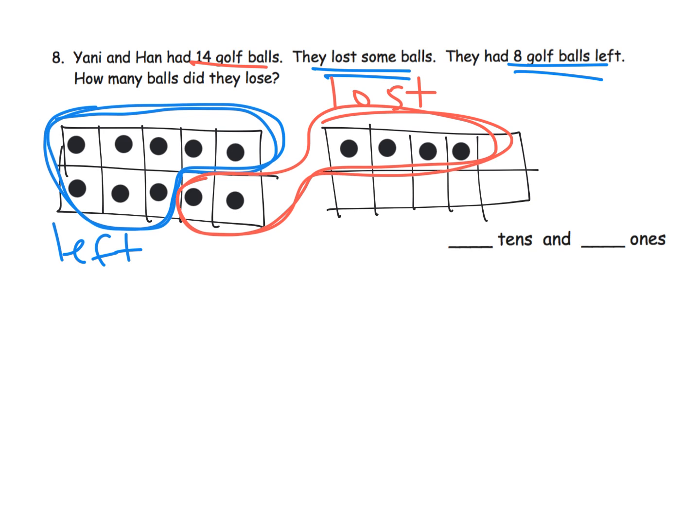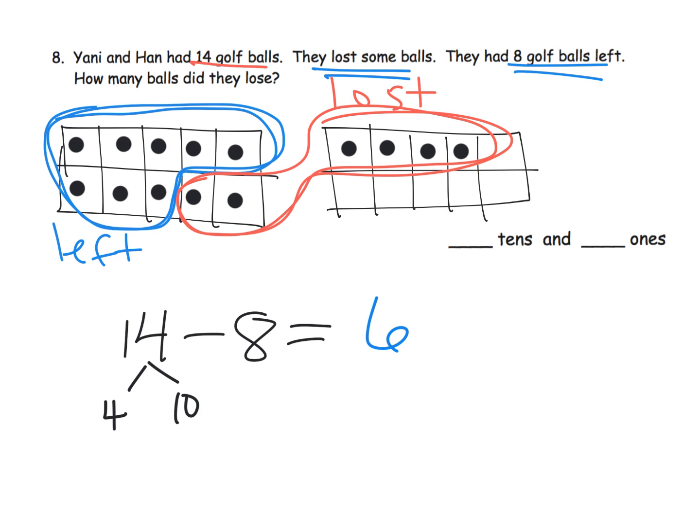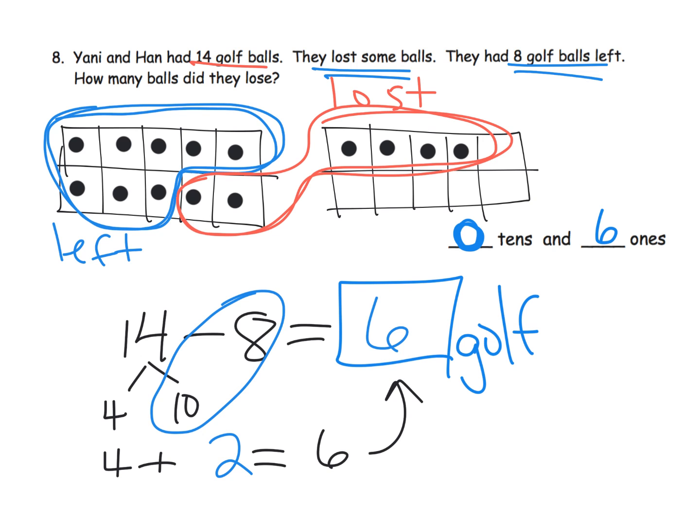So another way we can write this is we could say 14 minus 8 equals, and then we can count 1, 2, 3, 4, 5, 6. The answer is 6. Now another way we could do that is numerically, we can decompose that 14 to be 4 and 10. 10 minus 8 is 2, plus the original 4, and 4 plus 2 is 6. So what do we have over here? How many tens do we have? We have no tens and we have 6 ones left over, because our answer is 6 golf balls.